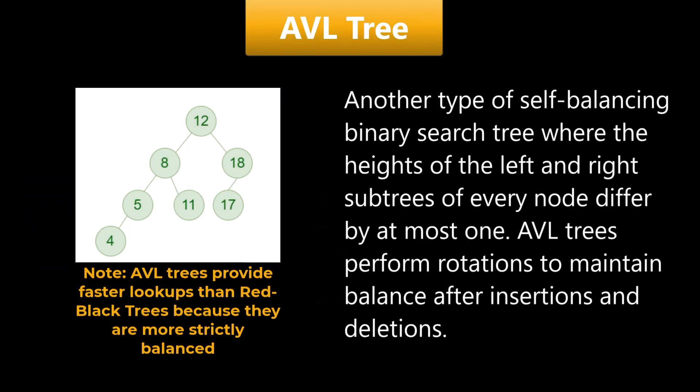AVL tree is another type of self-balancing binary search tree where the height of the left and right subtrees of every node differs by at most one. AVL trees perform rotations to maintain balance after insertions and deletions.